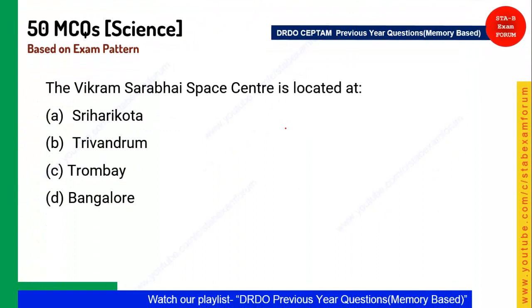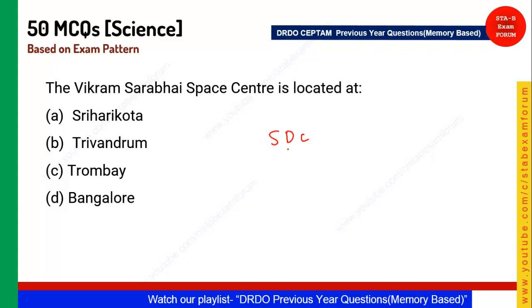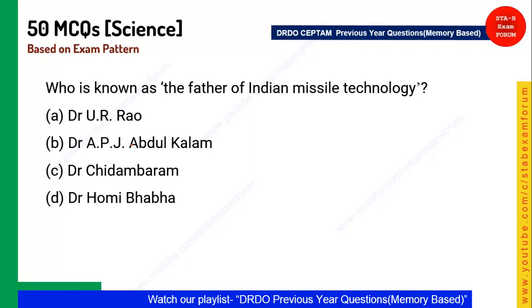Next question: The Vikram Sarabhai Space Centre is located where? Note that Satish Dhawan Space Centre is in Sriharikota. Vikram Sarabhai Space Centre is located in Trivandrum, and BARC is in Trombay while the master facility is in Bangalore. Option B is the correct answer.